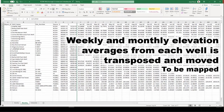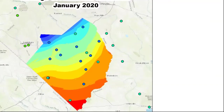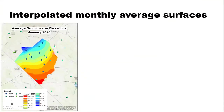We're more interested in the geospatial data, so we take those monthly averages and begin to map them out in weekly and monthly maps. Looking at our 2020 monthly maps starting in January, we can begin to look at various areas of interest. In the western portion of the county there's a little bit of an inclusion of lower water elevations, and in the eastern portion of the county we can see another small inclusion on the edge.